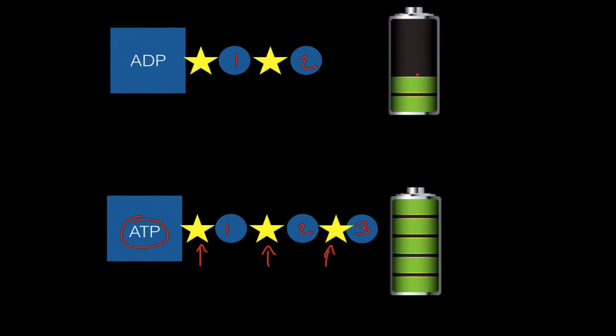ADP is kind of like a partially drained battery, and ATP is a fully charged molecule. And if the energy has been put in, it can be taken back out to do work, and that's exactly why cells need a constant supply of ATP to stay alive.